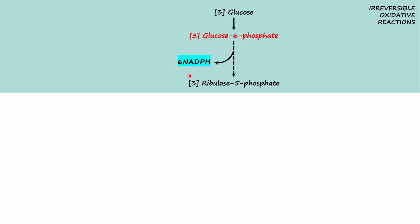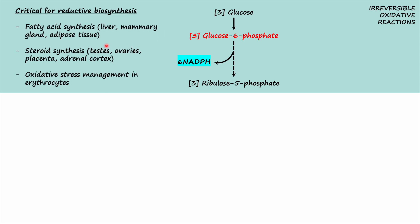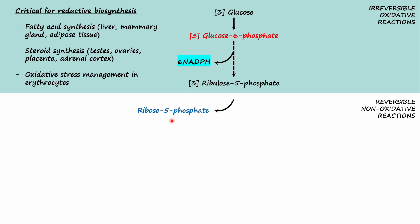NADPH is an excellent donor of high-energy electrons, functioning as a biochemical reductant. This portion of the pathway is particularly important in the liver, mammary gland, and adipose tissue for fatty acid synthesis, and also important in steroid synthesis in tissues such as the testes, ovaries, placenta, and adrenal cortex, as well as in dealing with oxidative stress in erythrocytes. The second phase is reversible non-oxidative reactions that permit ribulose 5-phosphate to be converted into ribose 5-phosphate, providing the sugar backbone for nucleotide synthesis in rapidly dividing cells.